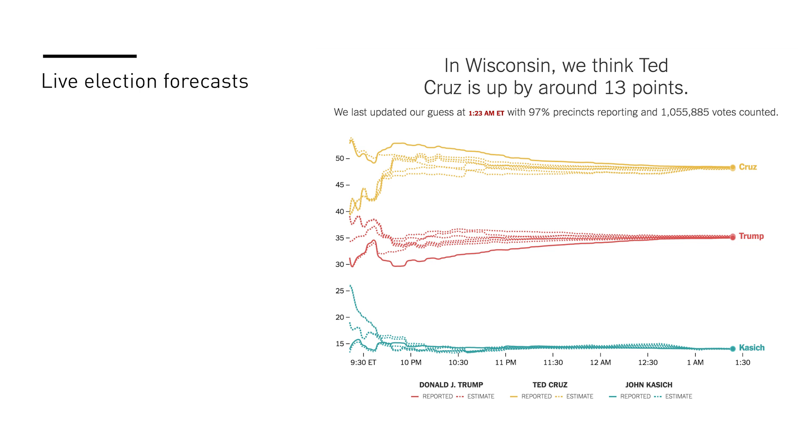The other thing we've been using R for a lot lately is running live primary forecasts. As the vote comes in, we're adjusting for where we already have the vote and where we're expecting more votes to come in from, and based on the demographics of those places, we adjust to what we think the final vote will be. In the most recent primary in Wisconsin, the vote from the area around Milwaukee came in first, very early in the night, which we knew based on demographics was tilted more toward Cruz than Trump. When the first votes came in showing Cruz up by about 25 points, we estimated it was more like 13 or 14 — and that's roughly where it ended up.